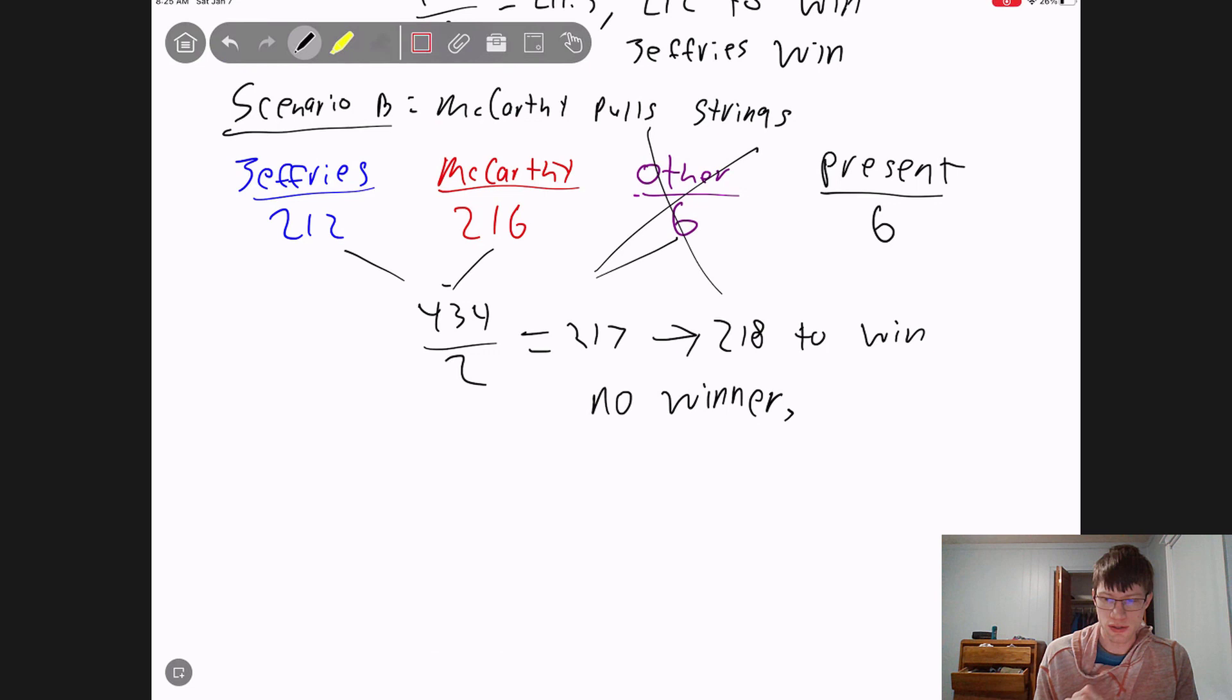Let me explain exactly why. So that changes the total. We no longer have a total of, we don't include this six in the total anymore. So now we have 212 plus 216 is only 428.